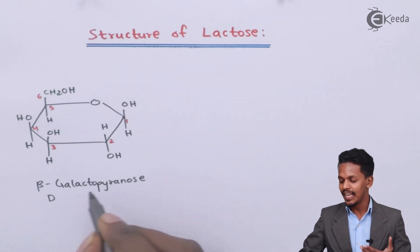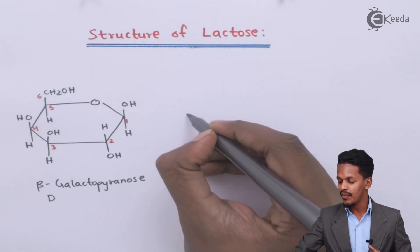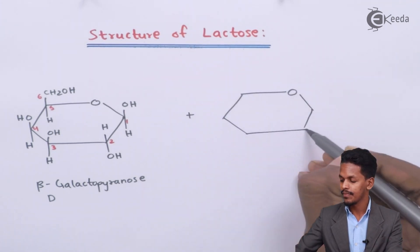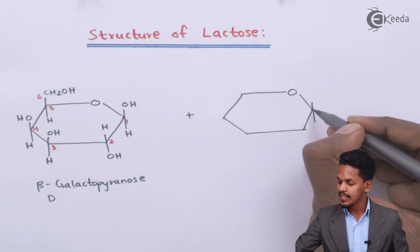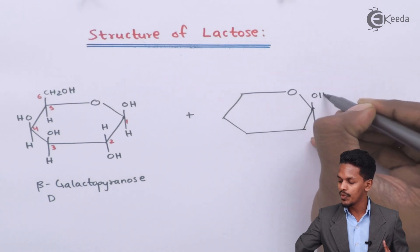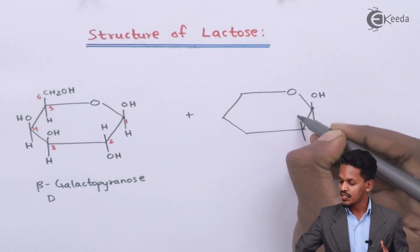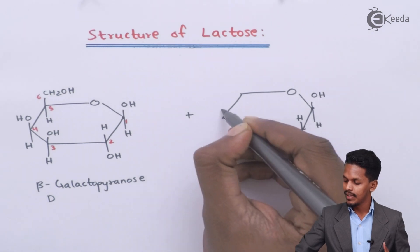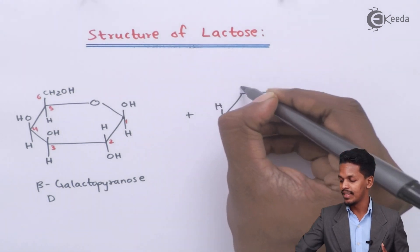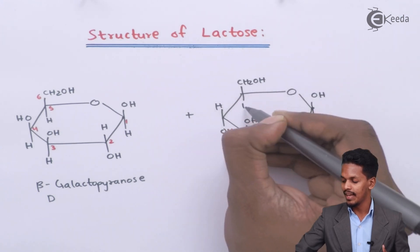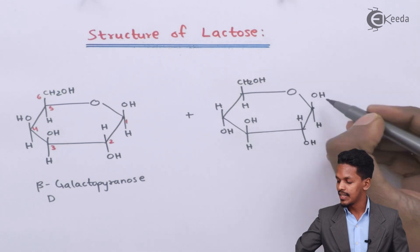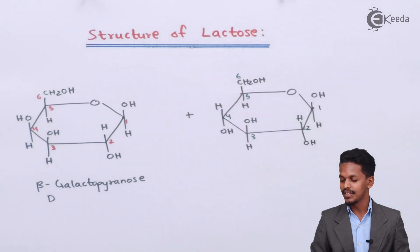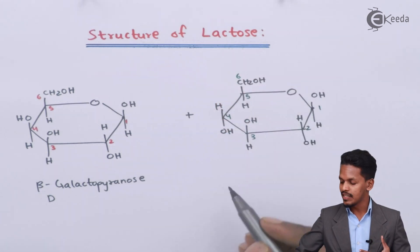Now, if beta-D-galactopyranose is combined with beta-D-glucopyranose, then for the glucopyranose: carbon number one has OH here and H here, the second carbon has OH on the downward side, the third has OH on the upper side with H here, the fourth has OH downward with H here, and carbon five connects to CH2OH at carbon six.